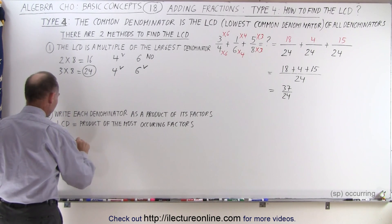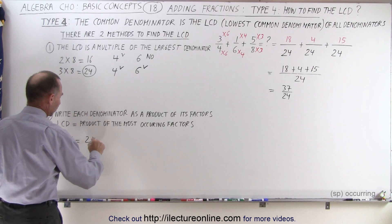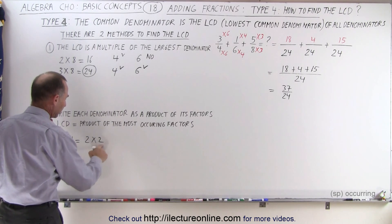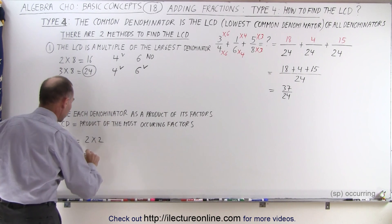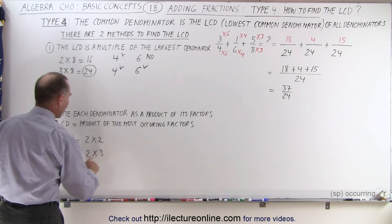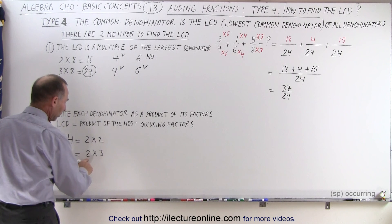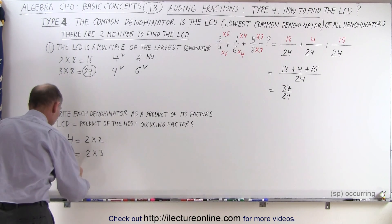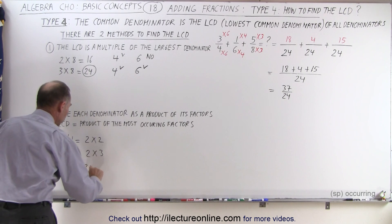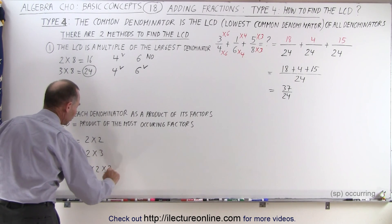So let's try that. So we take the denominator 4, which can be written as 2 times 2. So the factor 2 appears twice here. The number 6, the second denominator, can be written as 2 times 3. So we have the factor 2 that occurs once and the factor 3 that occurs once. Then we take the final denominator 8, which can be written as 2 times 2 times 2.